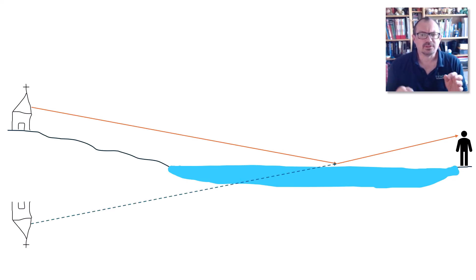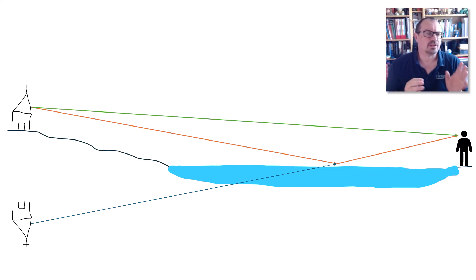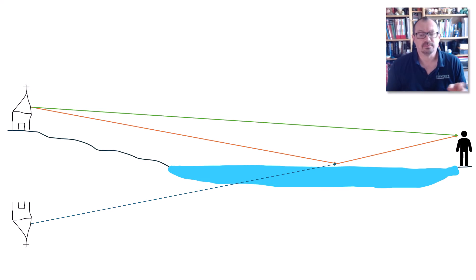To a person viewing this, it looks as though the light is coming from a point below the surface of the lake, and we see that as a reflection. We're also going to see the church normally because the light can come straight to us as well as bouncing off the lake, so we're going to see both the church and its reflection.